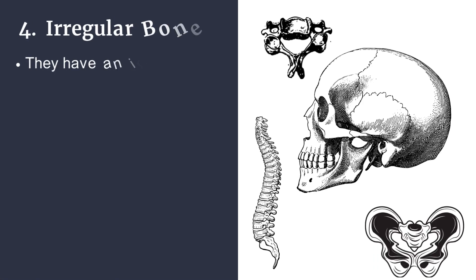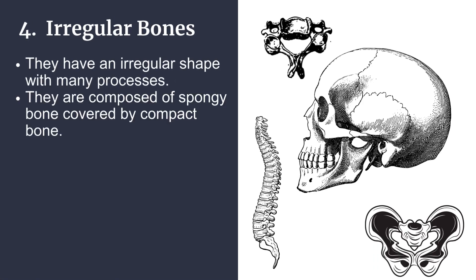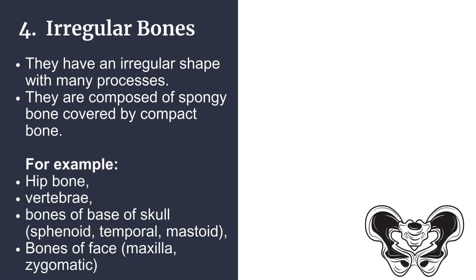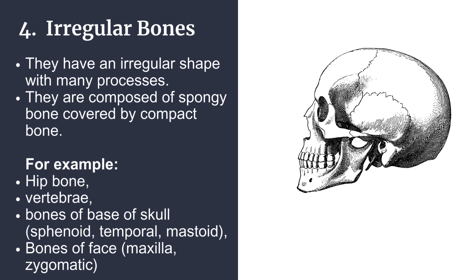Irregular bones have an irregular shape with many processes. They are composed of spongy bone covered by compact bone. For example, the hip bone, vertebrae, bones of the base of the skull such as sphenoid, temporal, and mastoid, and bones of the face like the maxilla and zygomatic.